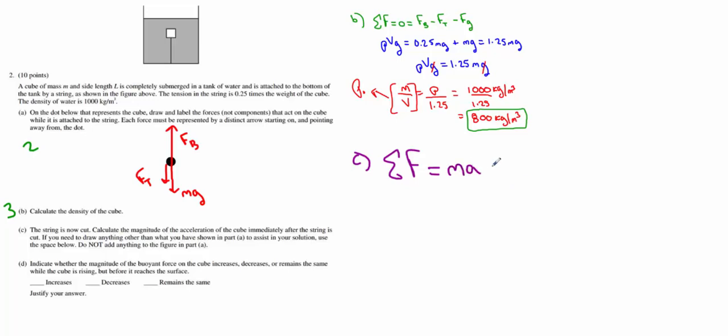And in this example, we only have the buoyant force up, and we only have gravity down. There is no tension anymore. Remember, that buoyant force is rho VG. So we have MA is rho VG minus MG. And ultimately, we're looking for A.